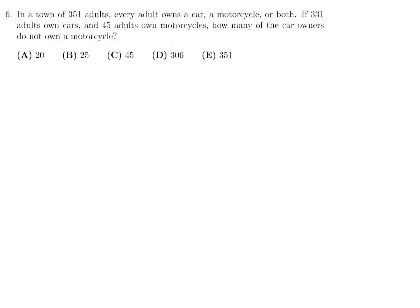In a town of 351 adults, every adult owns a car, a motorcycle, or both. If 331 adults own cars and 41 adults own motorcycles, how many of the car owners do not own a motorcycle? So we got one of those diagrams and let's figure this out. We'll call this big circle cars. All the people that own cars will go in that big circle. And the small circle we'll call motorbikes. All the people that own motorbikes will go in that smaller circle. And I'll call this A, this region I'll call B, and this region I'll call C.